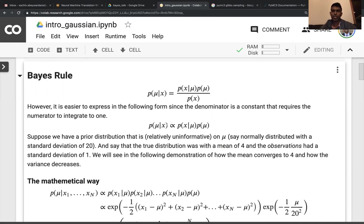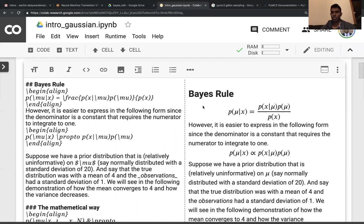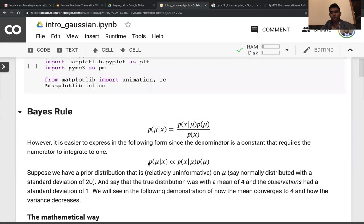You can use the simplified version to say it's proportional to x given mu multiplied by the prior. This should be coming from your high school math where you switch the two. This thing is called the prior. This thing is called the likelihood. A better way to do this is to look at this equation instead. This thing over here is called the posterior. What is the distribution of my variable that I'm looking at? In this case, the mean given my data. It's always going to be proportional to the likelihood times the prior.